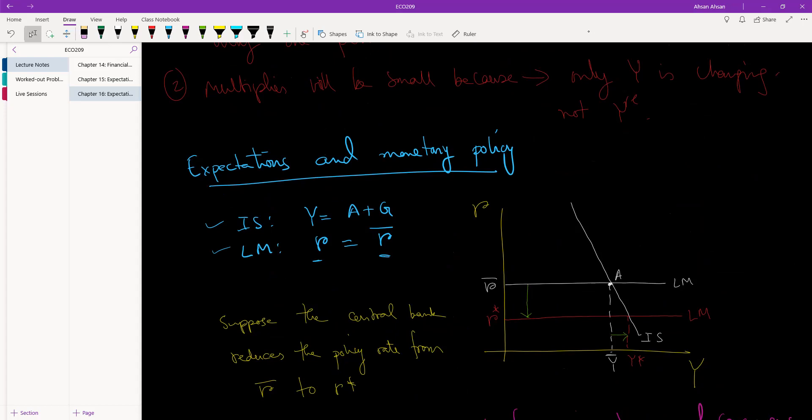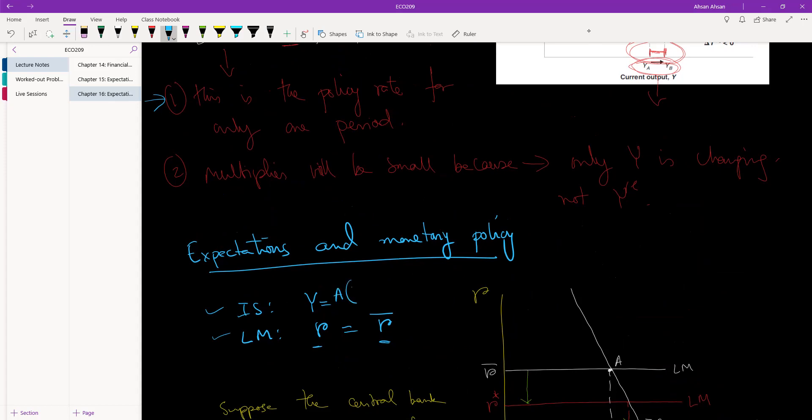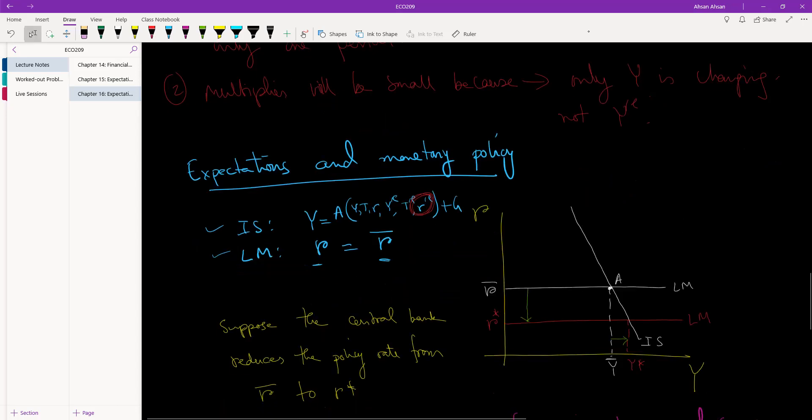Then what will happen? Let's come up to the IS curve, and I'm going to write down the entire thing. The IS curve is a function where we have Y = d(R, Y_e) + G. What has happened is people's expectation about future interest rate has changed. People now expect that interest rate will be lower in the future. What happens if expectation about future interest rate changes? Our IS curve is going to shift to the right.